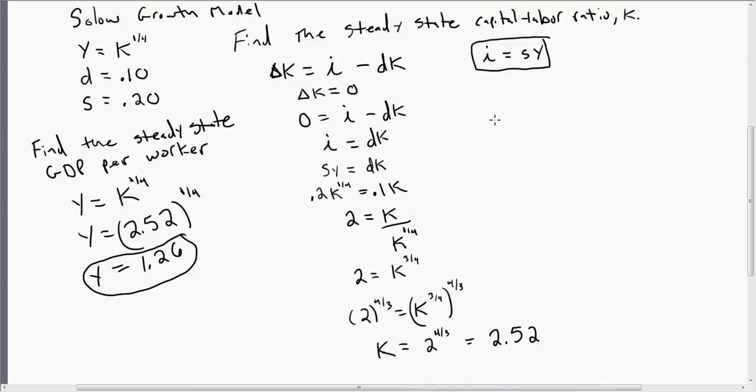Next, let's find the steady-state consumption per worker. So I'll just write SS, steady-state consumption per worker. The steady-state consumption per worker is going to be given by this equation. And this is an equation that we saw in my first video on the Solow growth model.